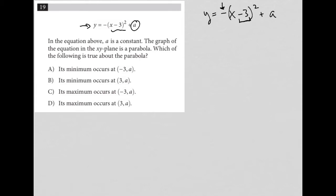Also, having a minus 3 here inside of parentheses means that our parabola will be shifted to the right 3 units. And the a here, which we don't know the value of, we do know that it's a constant.